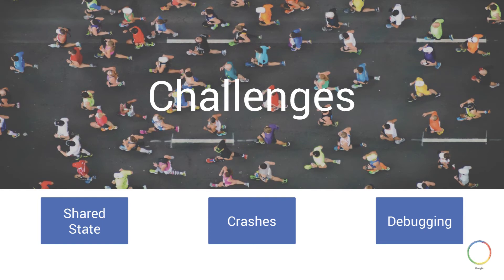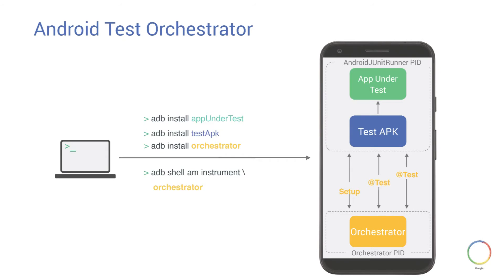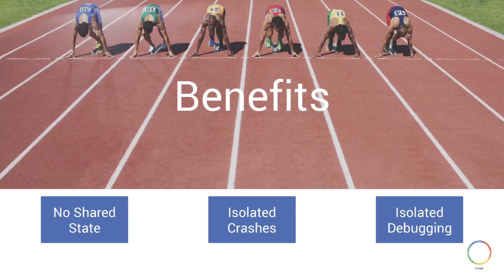This is why at Google we use the Android Test Orchestrator. It is a separate service APK that runs in the background in a separate process and is responsible for running each test in a single instrumentation invocation. The benefits are significant: there is no more shared state — each test is in its own isolated invocation. Crashes are isolated, so one test crash will not bring down the entire app and subsequent tests will continue to run. And for debugging, all the info you collect can now be scoped to a specific test as opposed to the entire test suite. As part of our latest ATSL release, you can use it as well.